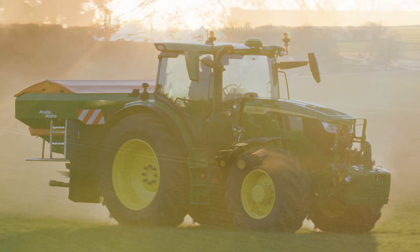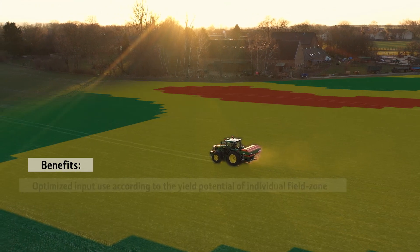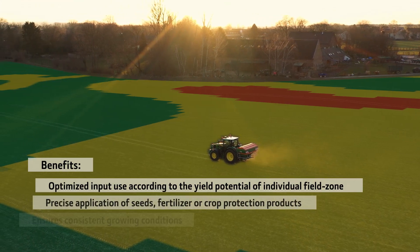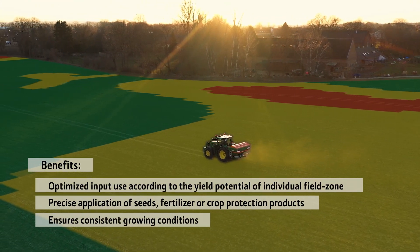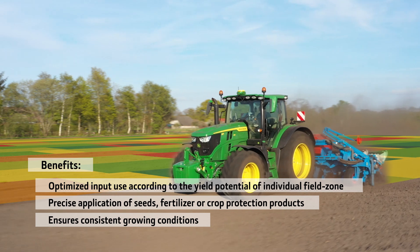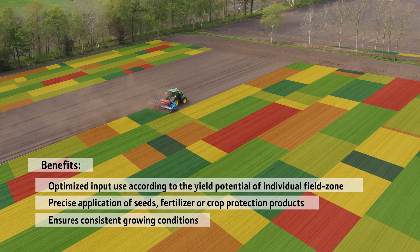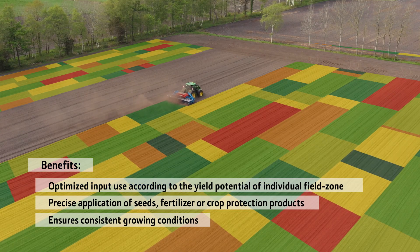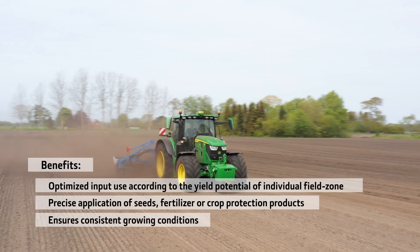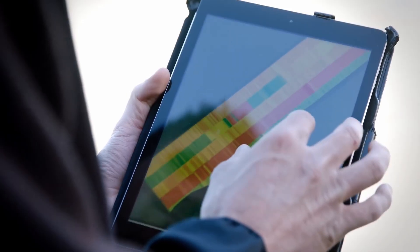With a variable rate application, you can precisely apply seeds, fertilizer, or crop protection products according to the yield potential of individual zones in your fields, which ensures consistent growing conditions.